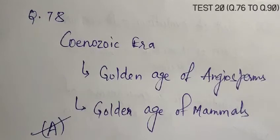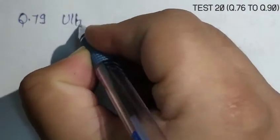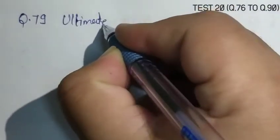Age of Mammals and Modern Flora. Question number 79, the ultimate source of organic evolution is?